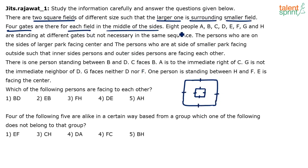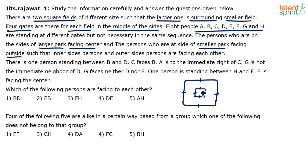So there are eight gates total — one, two, three, four on the outer field and one, two, three, four on the inner field. Eight people A, B, C, D, E, F, G, H are standing at different gates but not necessarily in that sequence. The persons on the sides of the larger park face the center, and the persons on the sides of the smaller park face outside — meaning at every gate the two persons are facing each other.